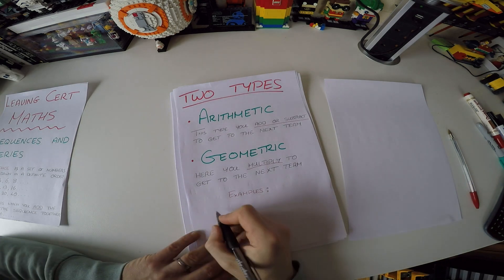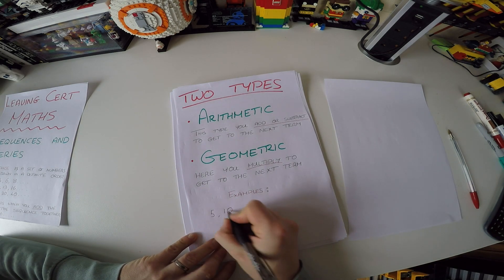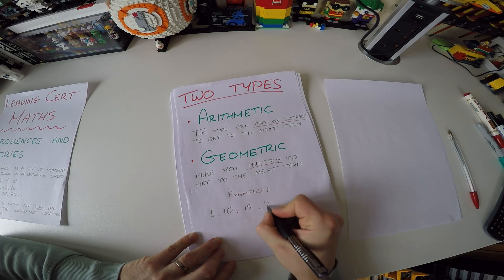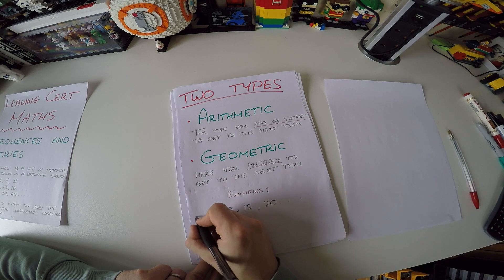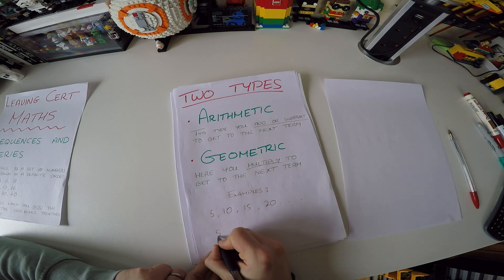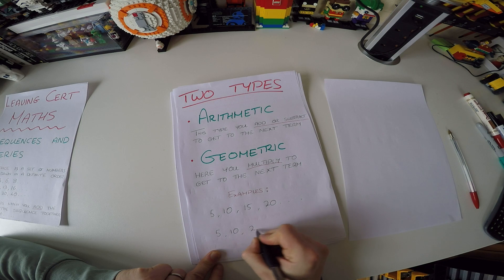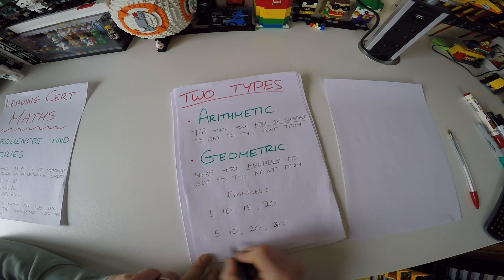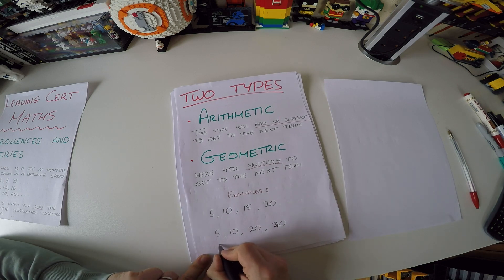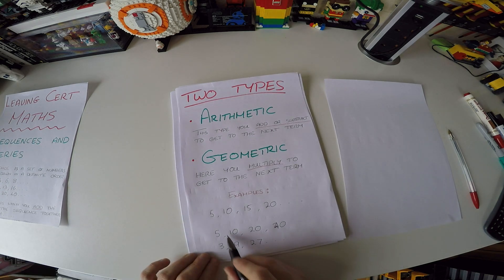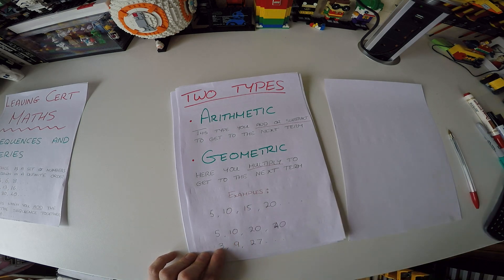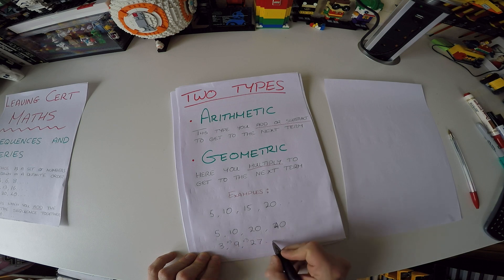An example of an arithmetic sequence would be 5, 10, 15, 20 — there's a common difference. A geometric sequence might look like 5, 10, 20, 40, or something like 3, 9, 27. Here we add 5 to get to the next term; there we double; and in the last one we multiply by 3, so the next term would be 81.